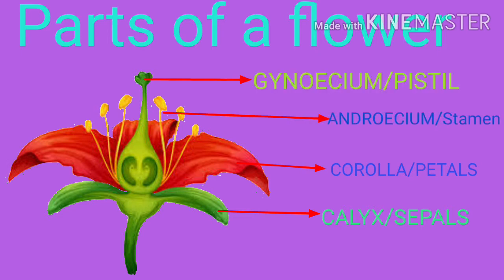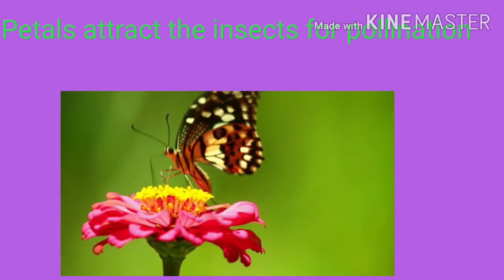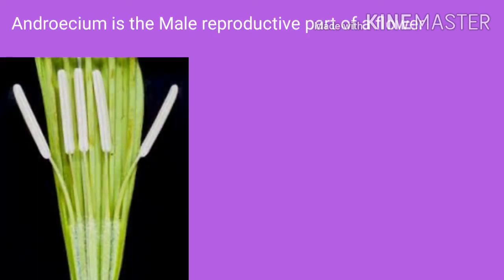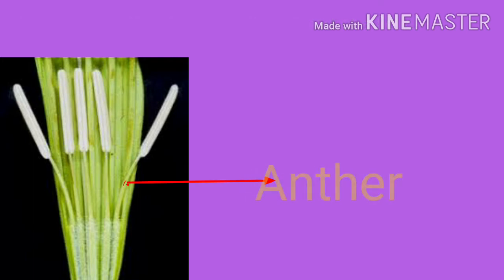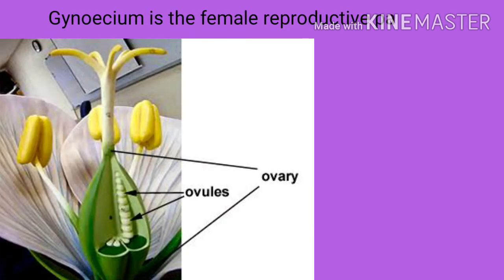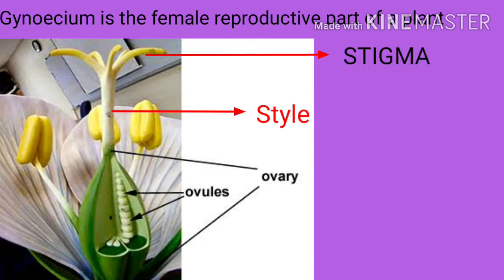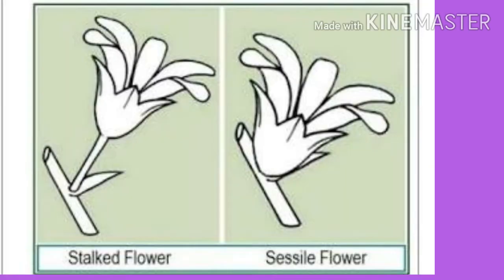or stamen, and gynoecium or pistil. Sepals are the protective parts of a flower. Petals attract the insects for pollination. Androecium is the male reproductive part of a flower; it contains anther and filament. Gynoecium is the female reproductive part of a flower; it contains ovary, style, and stigma. Ovules are present in the ovary.